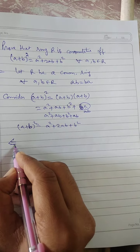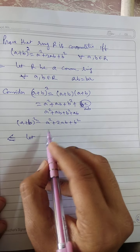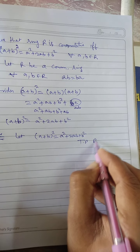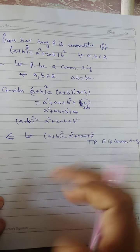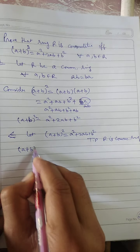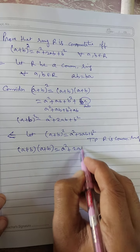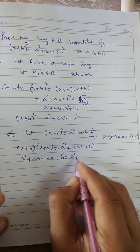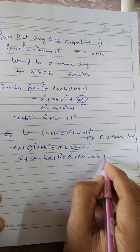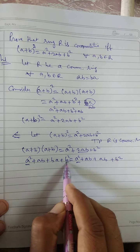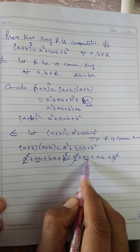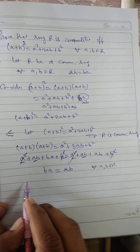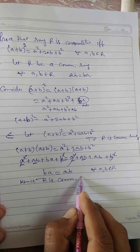Conversely, let (A plus B) whole squared equal A squared plus 2AB plus B squared. We need to prove R is a commutative ring. Now (A plus B)(A plus B) equals A squared plus AB plus BA plus B squared, and this equals A squared plus AB plus AB plus B squared. Canceling A squared and B squared from both sides, and canceling one AB from each side, we get BA equals AB for all A, B in R. Hence R is a commutative ring.